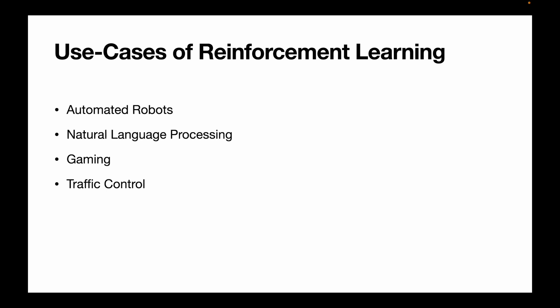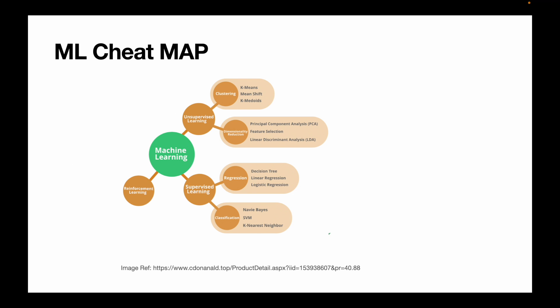Use cases of reinforcement learning: automated robots, natural language processing, gaming, and traffic controls. Here is the ML cheat map — you can see the bigger picture of machine learning. Algorithms are classified into three segments: reinforcement learning, supervised learning, and unsupervised learning. In the subfields you can see many algorithms: K-means, principal component analysis, decision tree, linear regression, and more. To avoid confusion, study these algorithms in groups — segment them by their learning type.